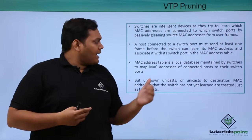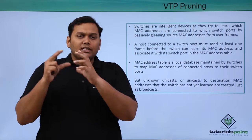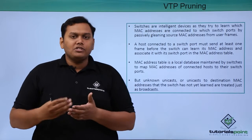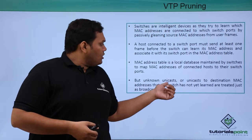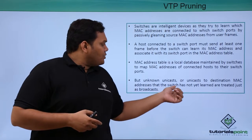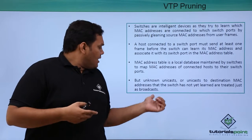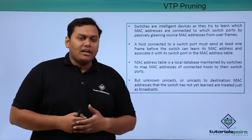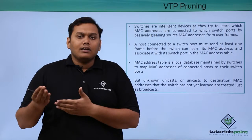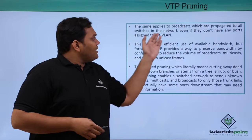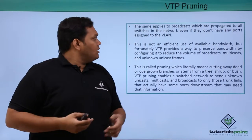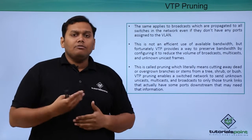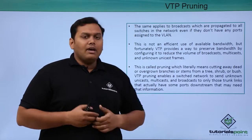The switch maps MAC addresses of connected hosts to switch ports. Any hosts connected to switch ports — the ports have the database with them about the MAC addresses, and from there they learn about which MAC address this frame has to be forwarded to. Unknown unicast — frames destined for MAC addresses the switch has not yet learned — are treated as broadcasts. The same applies to broadcasts, which are propagated to all network switches even if they don't have any ports connected to or assigned to that VLAN. This is not an efficient use of bandwidth.